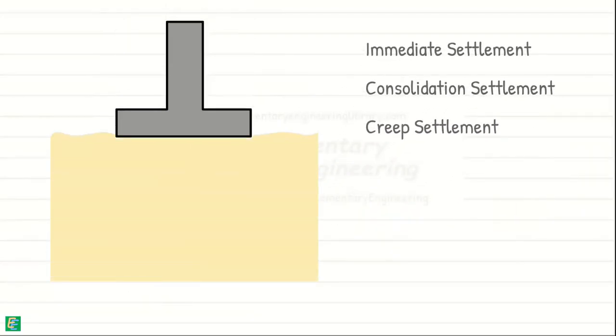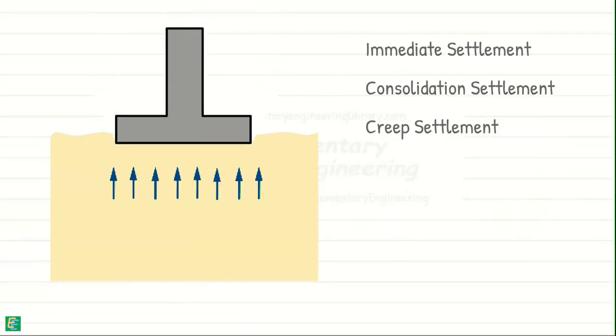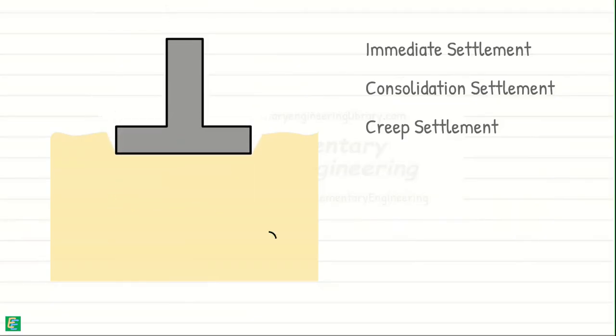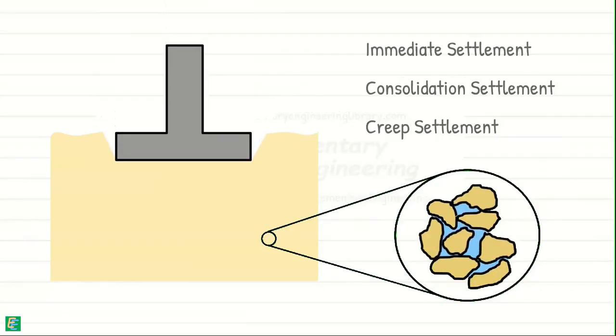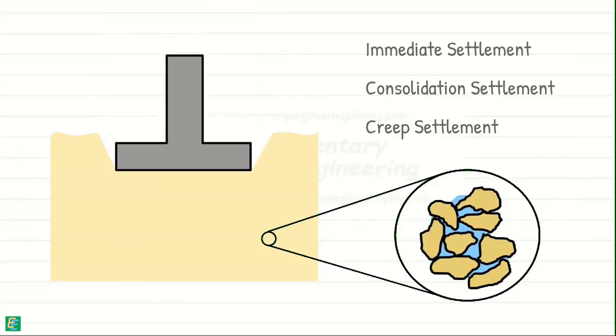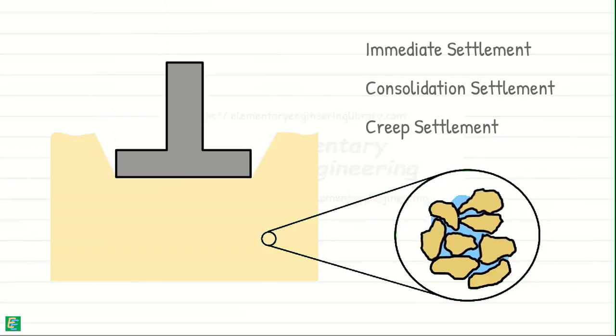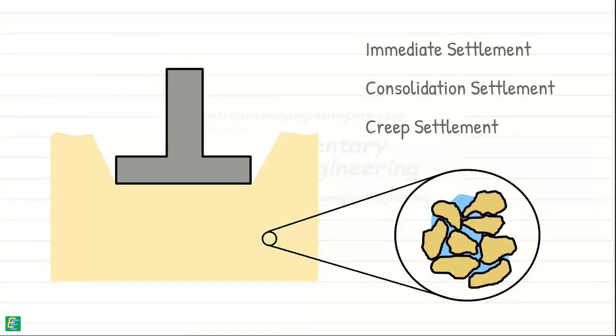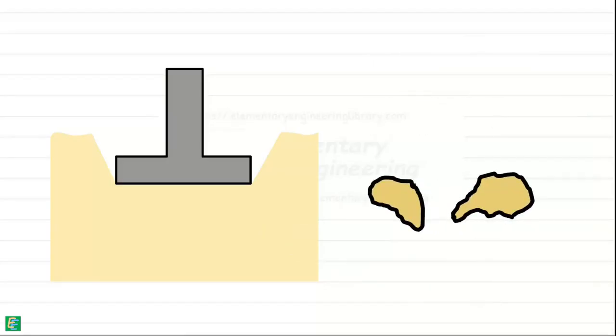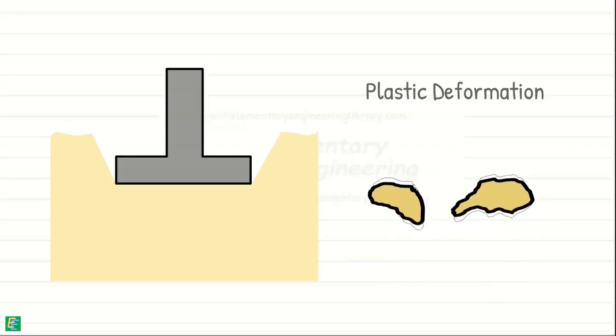Unlike consolidation settlement, where water plays a primary role, creep settlement happens even after the water has been squeezed out. It is believed to be related to the ongoing process of soil particles shifting and finding new equilibrium positions under constant load. Also, under sustained pressure, the individual soil particles themselves may undergo plastic deformation, meaning they slowly deform and change their shape permanently. This can lead to even denser packing of particles and contribute to creep settlement.